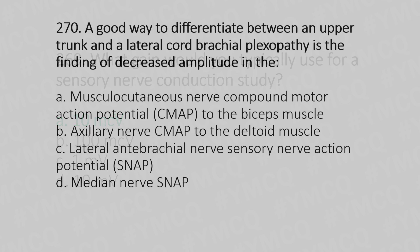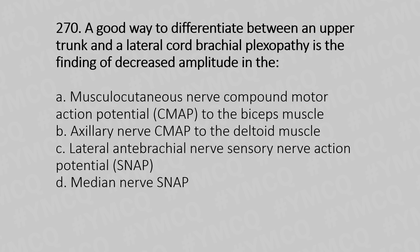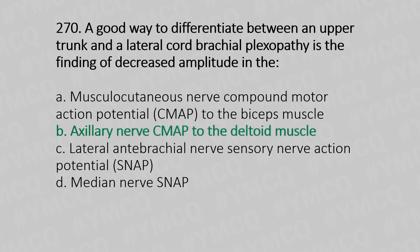Now let's move to question number 270. A good way to differentiate between an upper trunk and a lateral cord brachial plexopathy is the finding of decreased amplitude in the: Option A, Musculocutaneous nerve compound motor action potential to the biceps muscle; Option B, Axillary nerve CMAP to the deltoid muscle; Option C, Lateral antebrachial nerve sensory nerve conduction potential; Option D, Median nerve SNAP. And the answer is Option B, Axillary nerve CMAP to the deltoid.